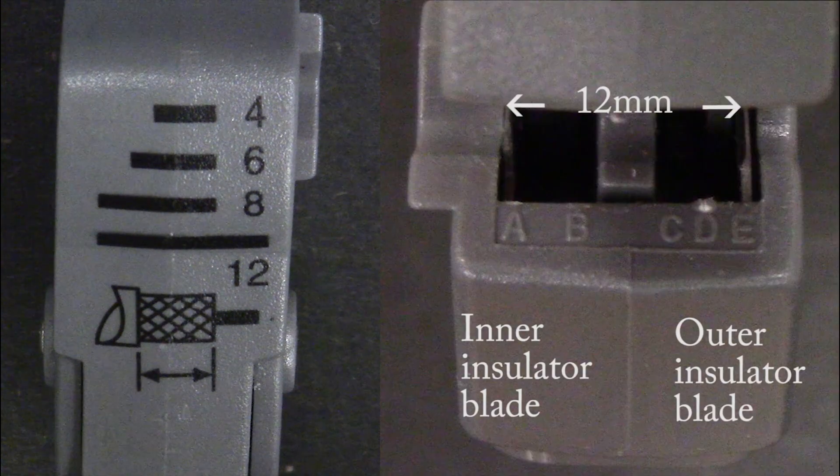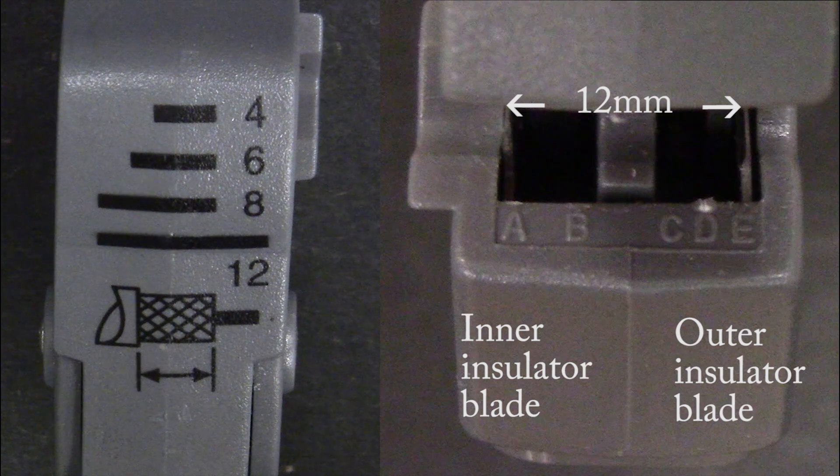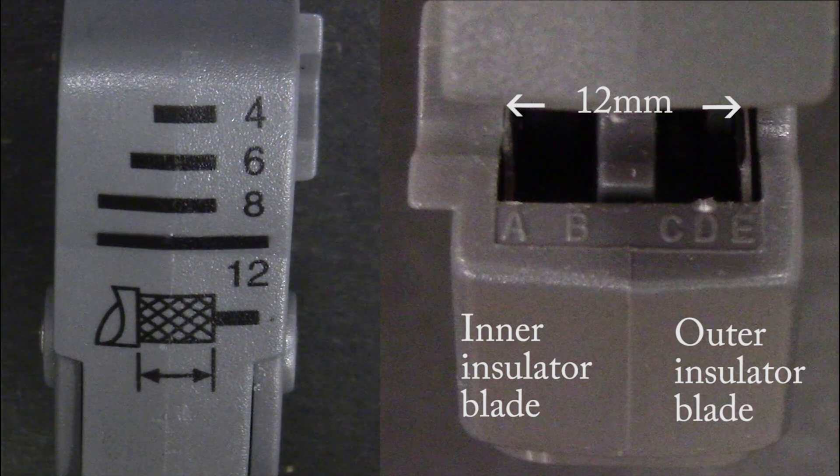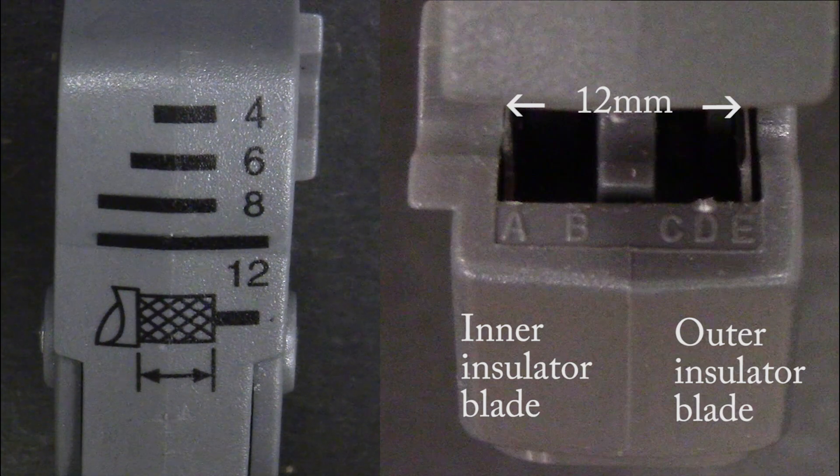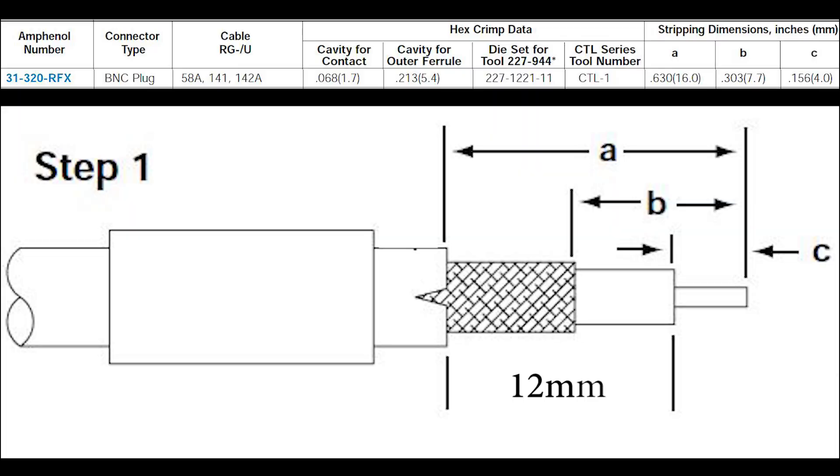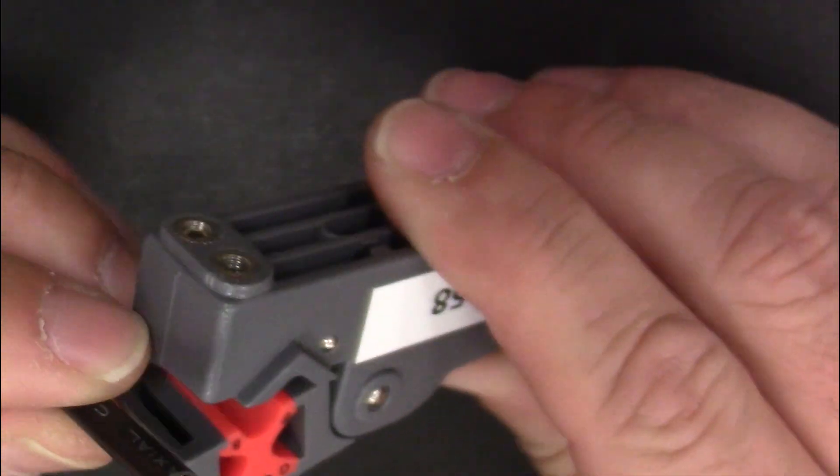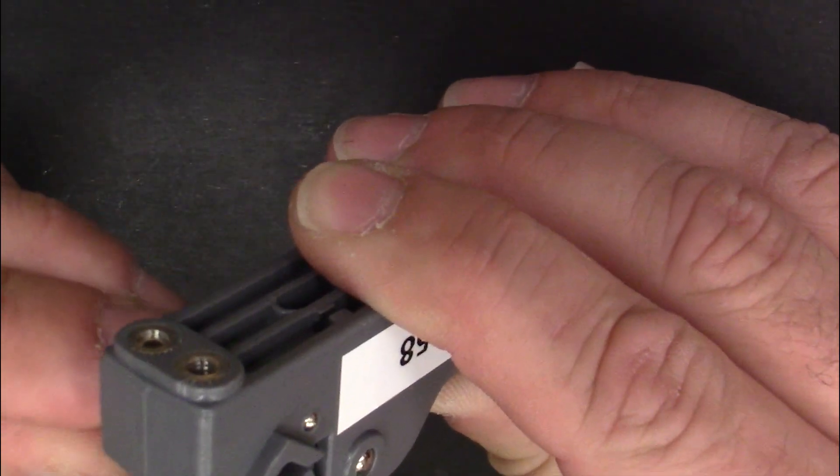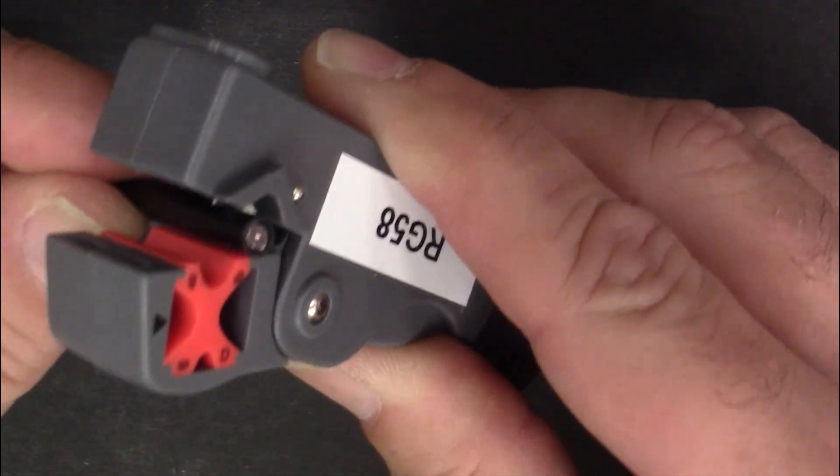Use the coax cable stripper tool. Open the tool and verify the blades are set to A for the inner insulator blade. The data sheet shows 12 millimeters from outer insulator to center conductor. Ensure you leave over 4 millimeters of center conductor when stripping the cable.